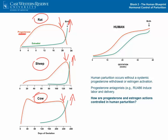But this doesn't happen in women. In women, the levels of progesterone stay high for most of pregnancy and so too do the levels of estradiol. Yet what we know is that in women, if we block the function of progesterone with a progesterone receptor antagonist such as RU486, then labor and delivery will occur within 24 to 72 hours.